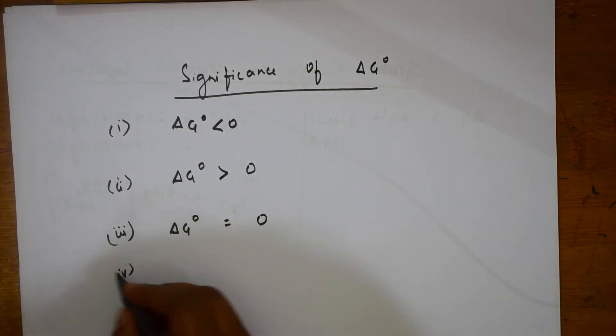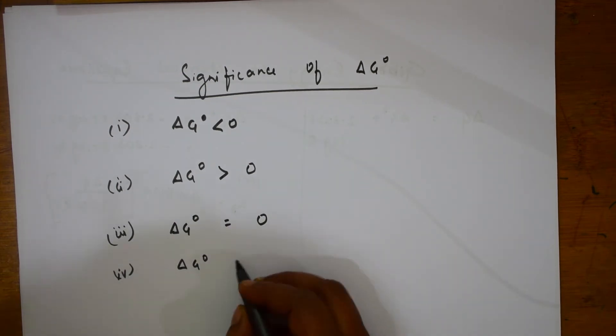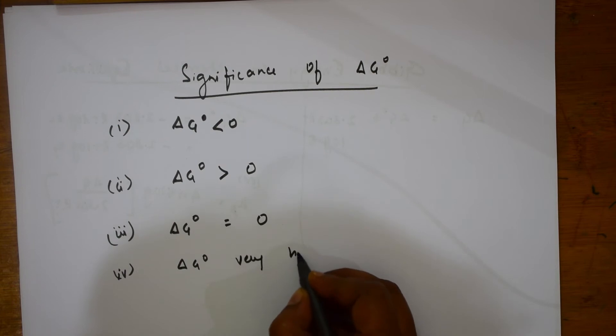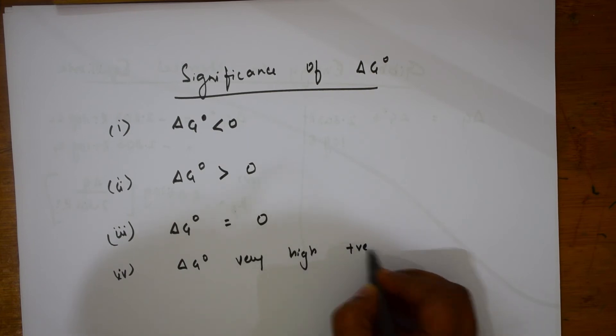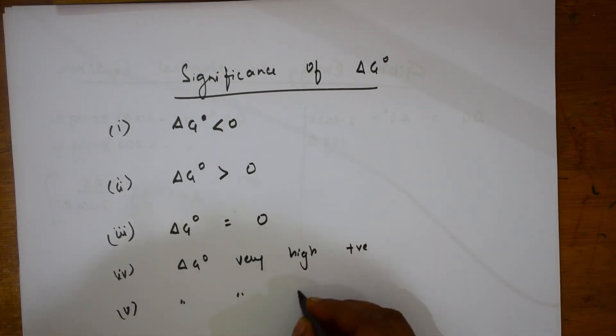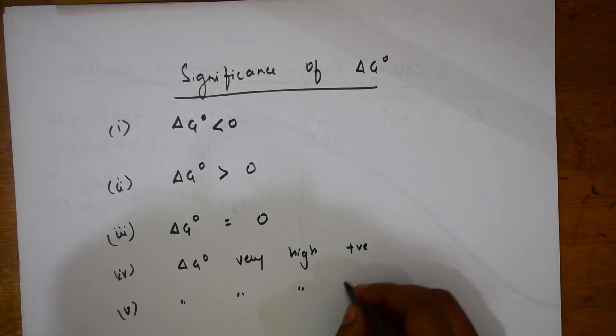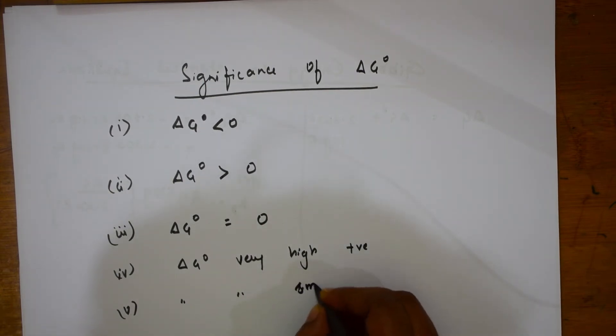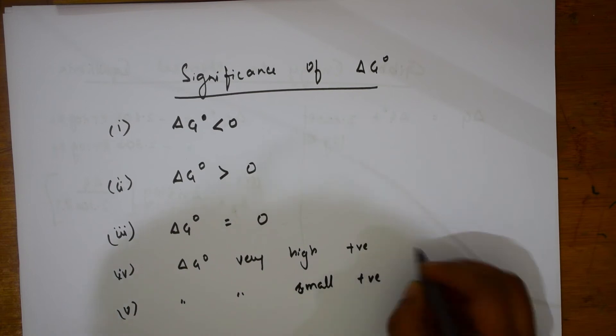Fourth condition: if Delta G naught has very high positive value. Sixth condition: Delta G naught has very small positive value. Very high positive value and very small positive value.